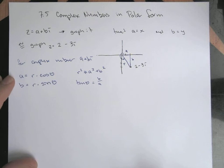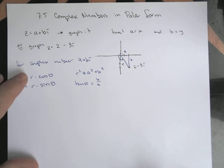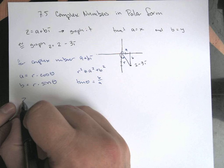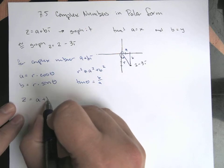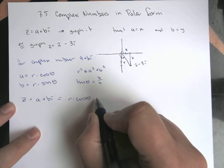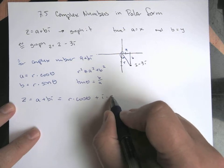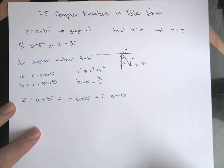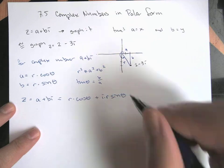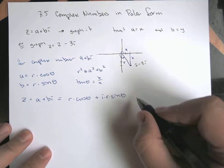What this gives us then, if I have this sort of a and b is r times the cosine and r times the sine, so now a number, so z equals a plus bi, so this becomes r times cosine theta plus, like, i times the sine, whoops, I'm sorry, i times r times the sine of theta.